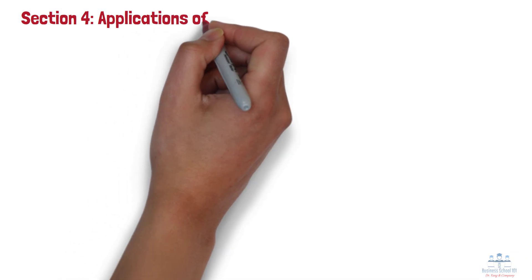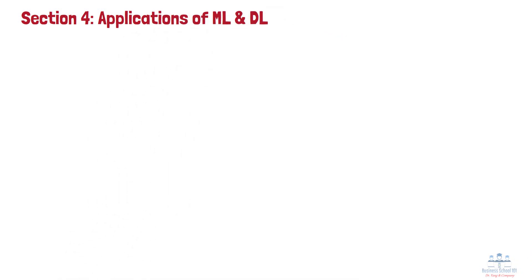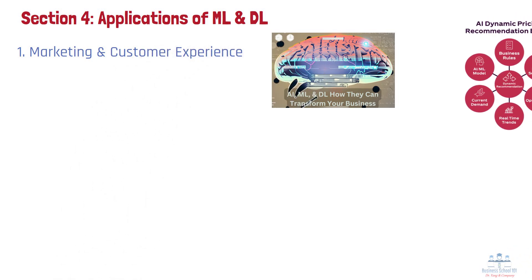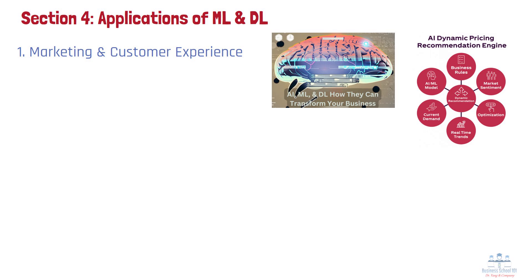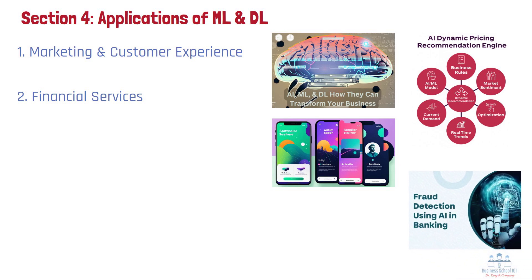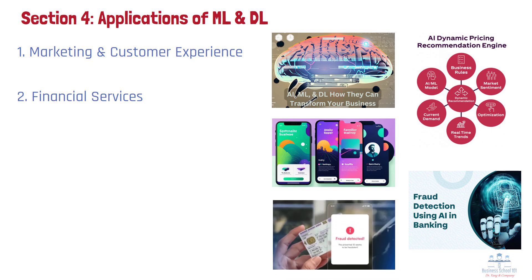Section 4: Applications of ML and DL. ML and DL are not just theoretical concepts — they're transforming businesses across industries. Number 1: Marketing and Customer Experience. ML and DL power recommendation engines, dynamic pricing, and personalized marketing campaigns. For example, Spotify uses ML to analyze your listening habits and create custom playlists, enhancing your music experience and increasing user retention. Number 2: Financial Services. AI technologies help detect fraud, assess credit risk, and automate trading. For example, banks use DL models to analyze transactions in real-time, identifying patterns indicative of fraud and preventing losses.